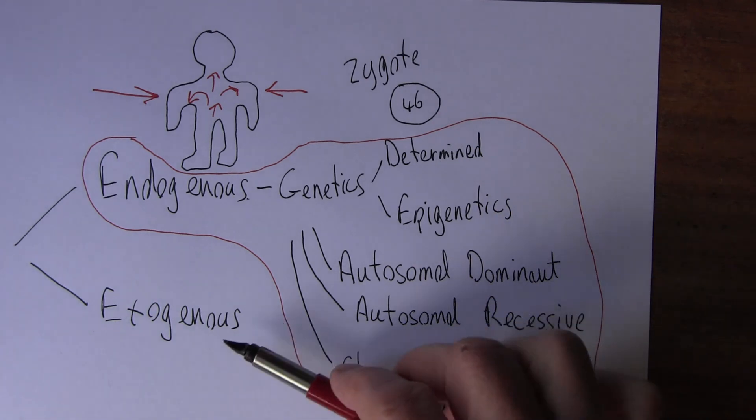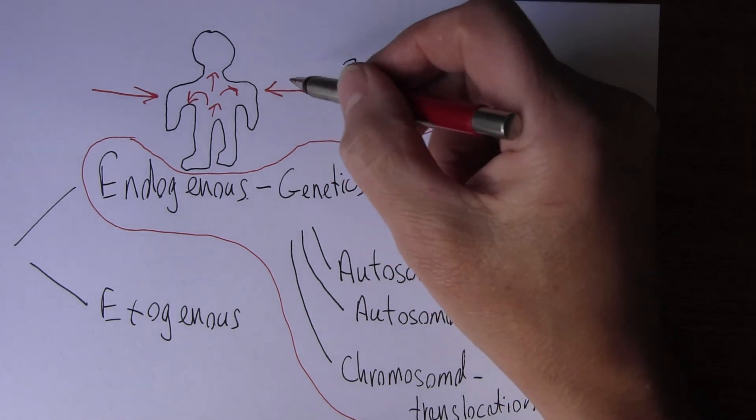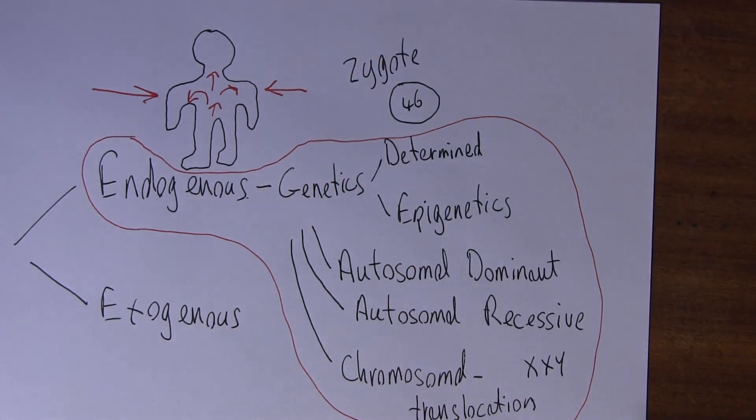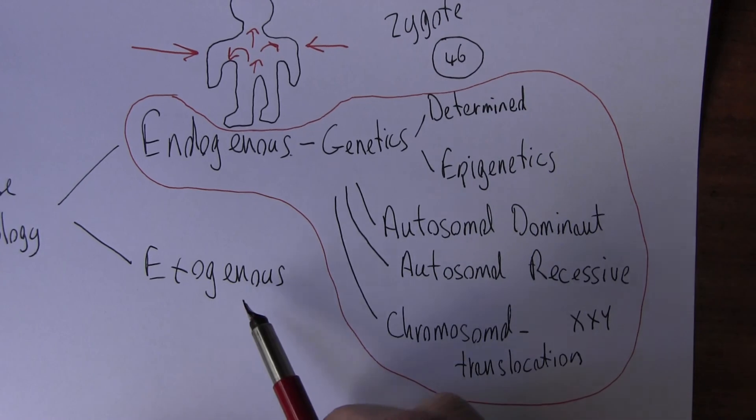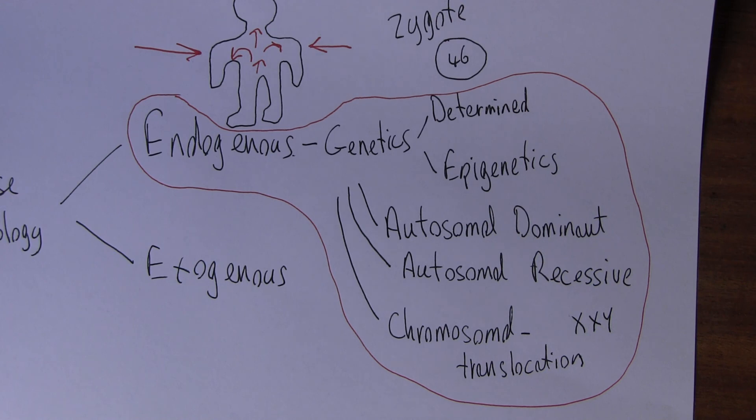But endogenous factors in disease - the endogenous factors arise from outside the individual. So mostly when we're talking about disease etiology we're talking about exogenous factors. Exogenous factors, and we'll look at these exogenous factors in the next clip.